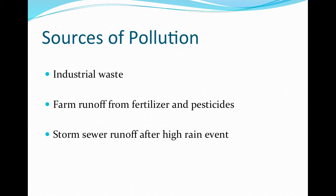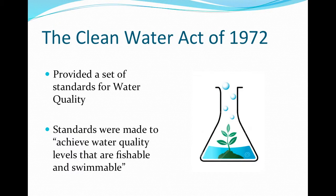Sources of pollution are industrial waste, runoff from fertilizers and pesticides, and stormwater runoff. Industrial pollution is highly regulated and considered point source pollution. Runoff from farms and cities is considered non-point source pollution and is not well regulated. There have been numerous local, state, and federal regulations that have increased the quality of surface waters in the United States. The Clean Water Act was enacted in 1972 and has since been amended. This act provided standards for allowable pollutants and a permitting process that reduces the impacts of industry on surface water, and also provides funds to cover monitoring and enforcement costs.